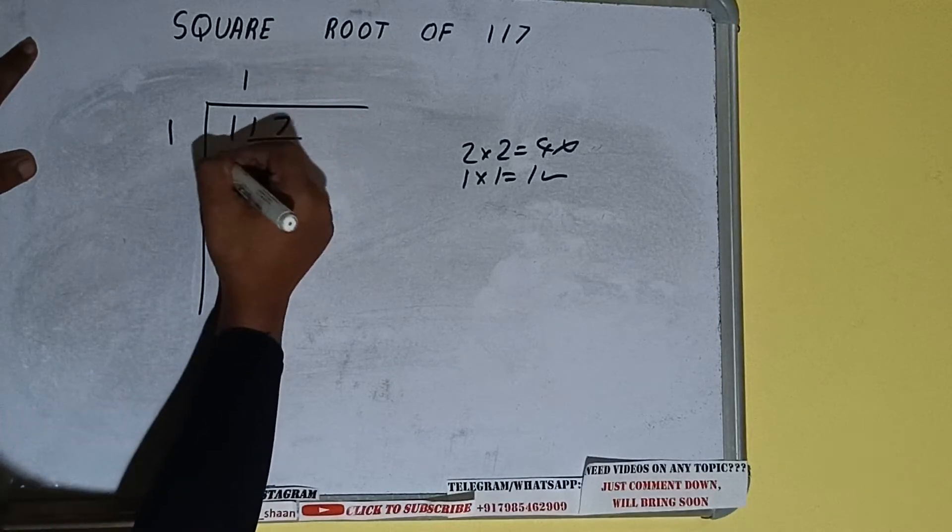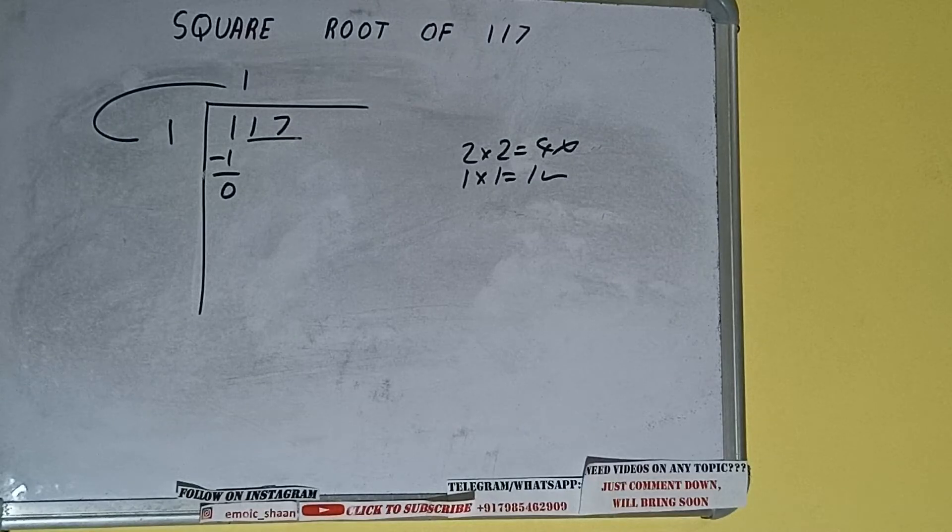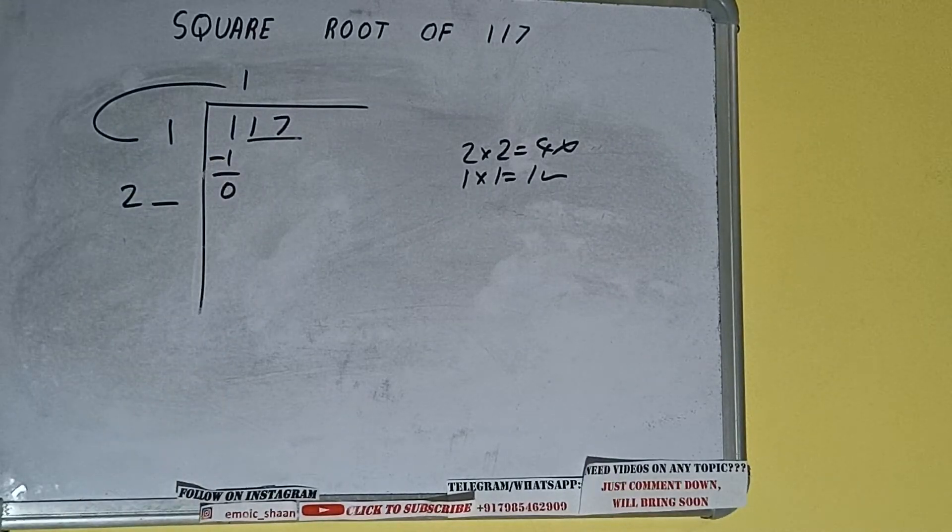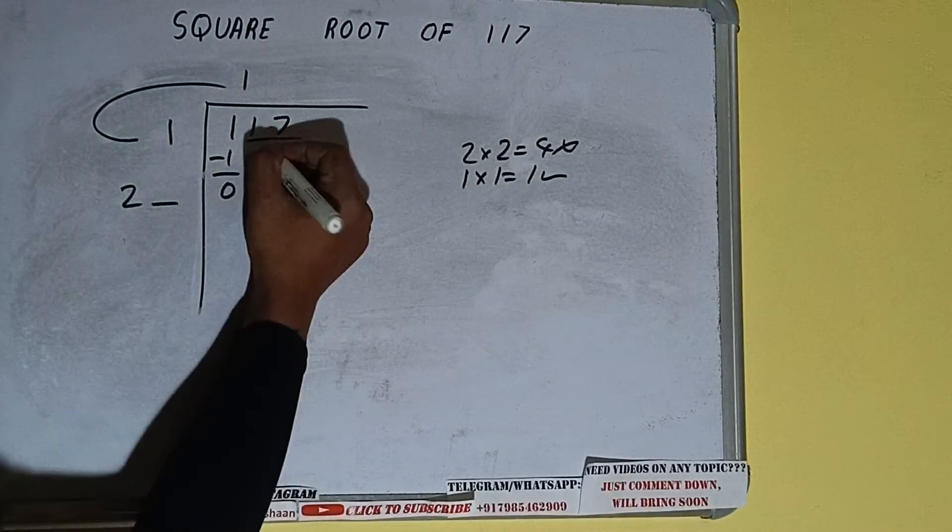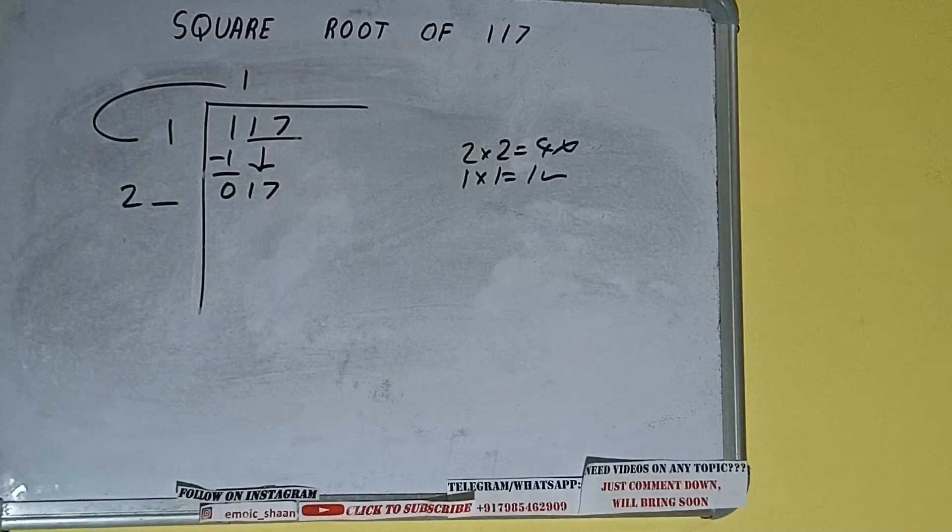So 1 here and 1 here, 1 subtract 0 will be left. We did 1 into 1 so add both. So 1 plus 1 will be 2. Write it here and keep a digit extra and this number we need to make it big. So bring the next pair down and whatever number we write here we have to write here also.